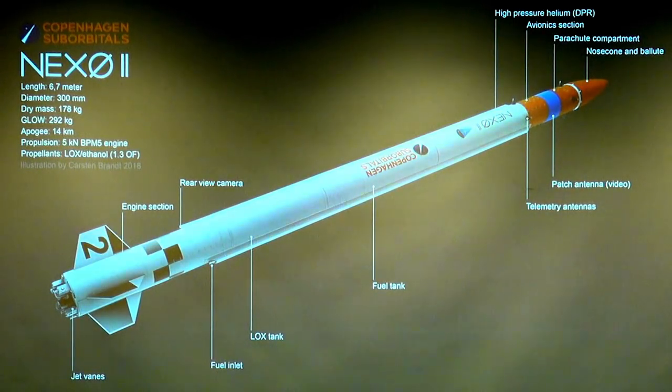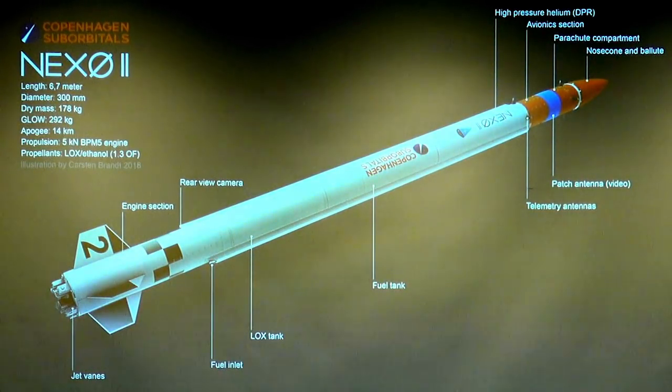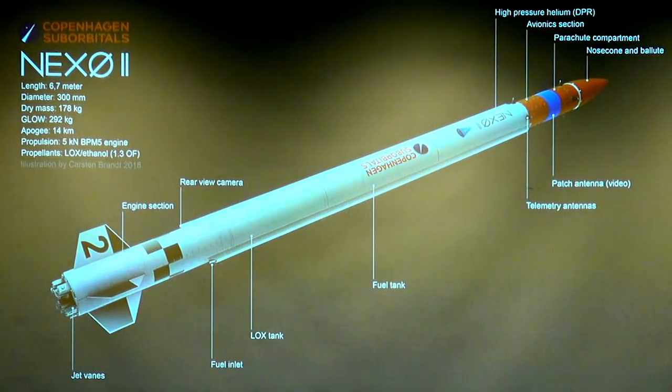So Nexo 2, 6.7 meters long, diameter of 300 millimeters. It has actually quite a bad length to diameter ratio, very long and thin. Dry mass about 180 kilos and liftoff mass about 300 kilos.